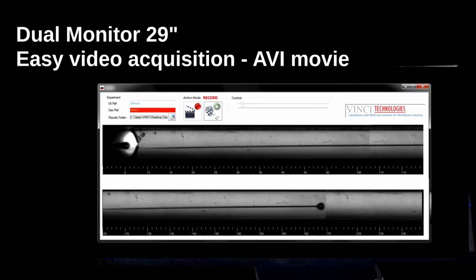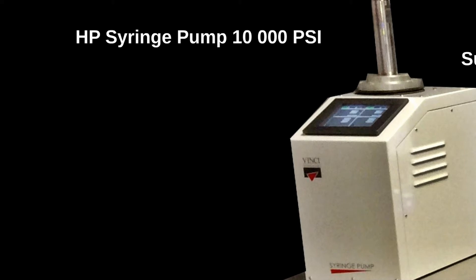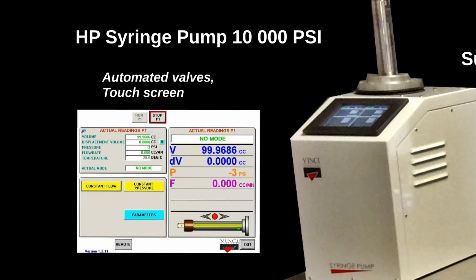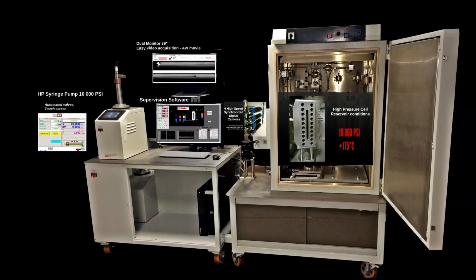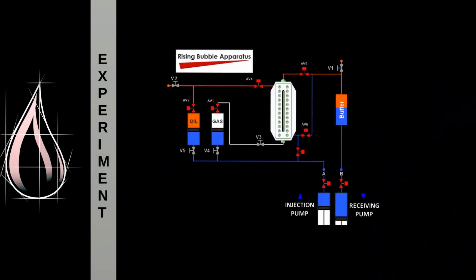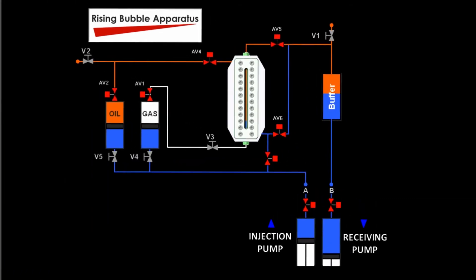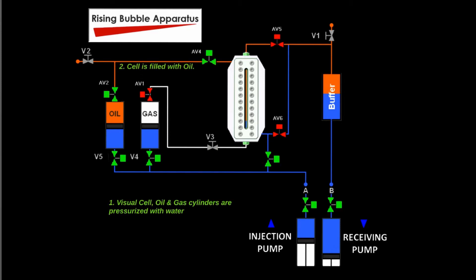A second monitor is dedicated to video acquisition and records movies in real time continuously. The RBA also features two high pressure syringe pumps with touch screen control panel to pressurize the cell and the accumulator. The experiment with RBA becomes very easy thanks to the supervision software and automated valves. The injection pump increases the pressure in the sample accumulator and the visual cell, then the cell is filled with live oil. A single bubble of gas is released through the needle while cameras record the bubble rising. The same operation is done at different pressure steps, and over only one day, MMP can be identified.